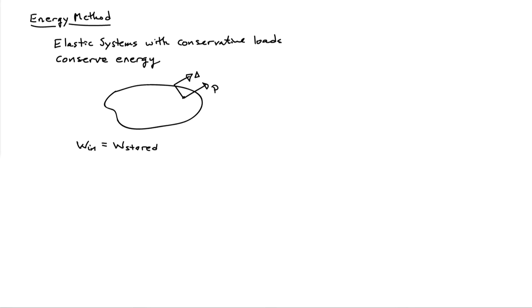Let's consider our canonical problem: a 1D bar with a force P on the end, and there'll be a deflection delta at the other end of the bar. I'd like to determine the relationship between P and delta.